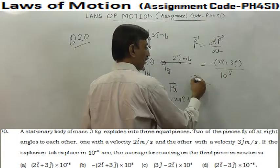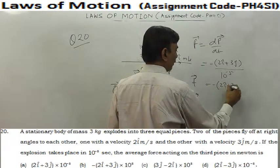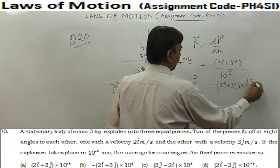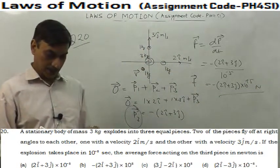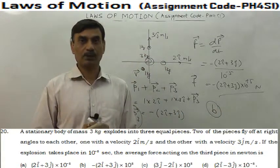So force will be minus 2i cap plus 3j cap into 10 to power plus 5 newton. That is the right answer. B is the right option to question number 20.